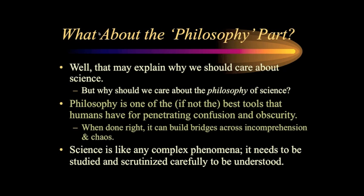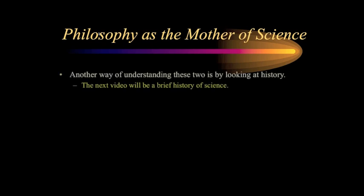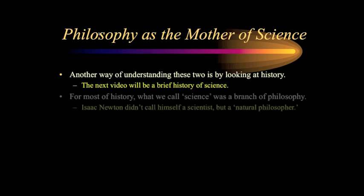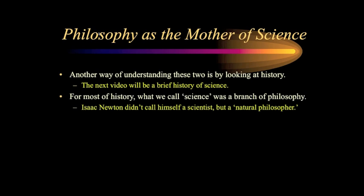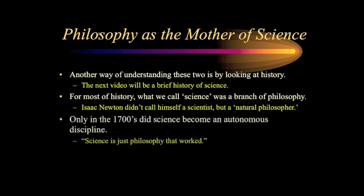Science is a complex phenomenon, and like any other complex phenomenon, it needs to be studied, scrutinized, and carefully understood. When you do that, you are engaging in the philosophy of science, not science itself. Another way of understanding the relationship between philosophy and science is by looking at history. For most of history, what we today call science was actually a branch of philosophy. Were you to go back in time and talk to Isaac Newton and ask him his occupation, he would not describe himself as a scientist — he would describe himself as a natural philosopher. Science was the branch of philosophy that studied the natural world, from the pre-Socratics up until at least the 1700s. One of my philosophy professors put the point this way: science is just philosophy that worked — and perhaps someday today's philosophy will become tomorrow's science.